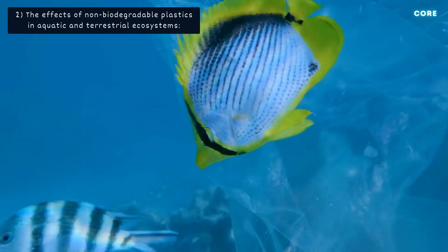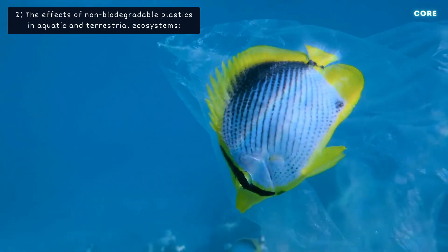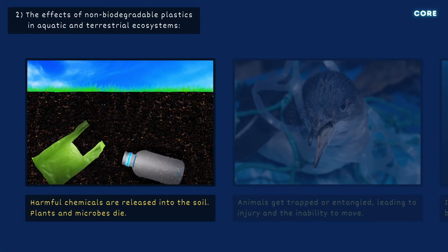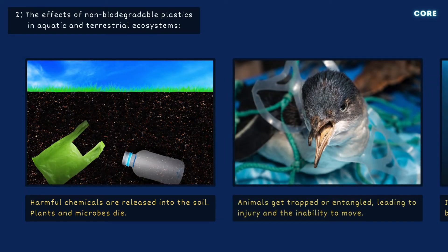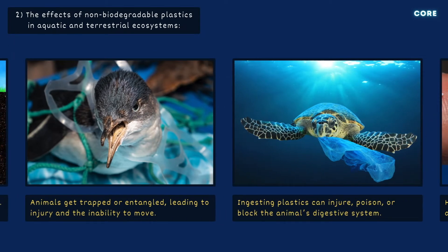discarded plastics will remain in the environment, taking up valuable space and harming the organisms that live there. Plastic waste can leach harmful chemicals into the soil, affecting plant growth, microbial communities, and the overall health of the ecosystem. Animals may get trapped in plastic bottles, entangled in nylon fishing nets, or consume plastic bags, mistaking them for food. Ingesting plastics can internally injure, poison, or even malnourish the animal, by blocking their digestive system.